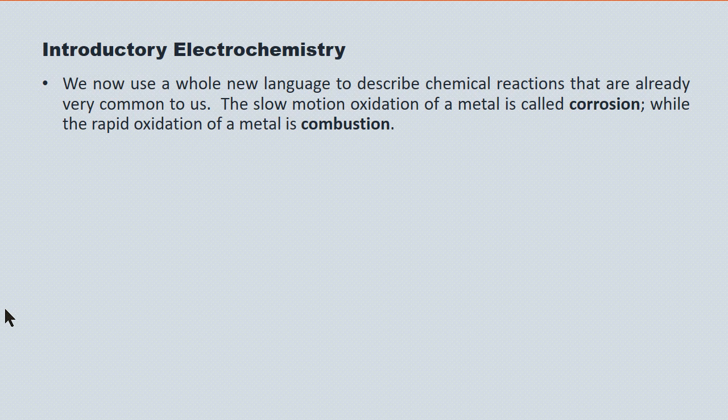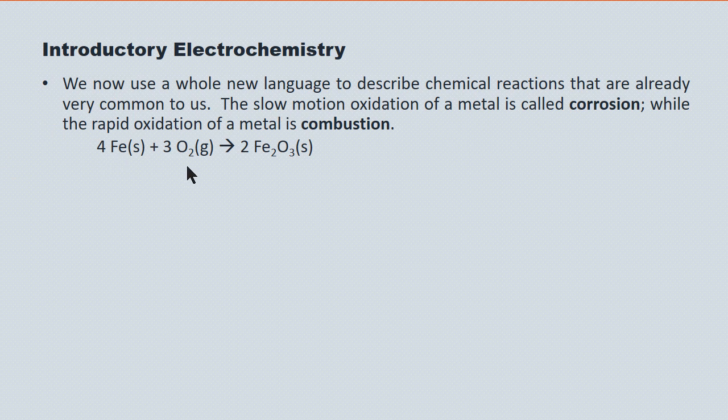We've layered on a whole new language to describe chemical reactions. The slow-motion oxidation of a metal is called corrosion; we need to understand it conceptually as an oxidation. Combustion is in fact the rapid oxidation of a metal. Here again is the oxidation of iron on either a slow or rapid basis — it's the same chemical process. The neutral iron atom is being converted into the iron(III) ion.